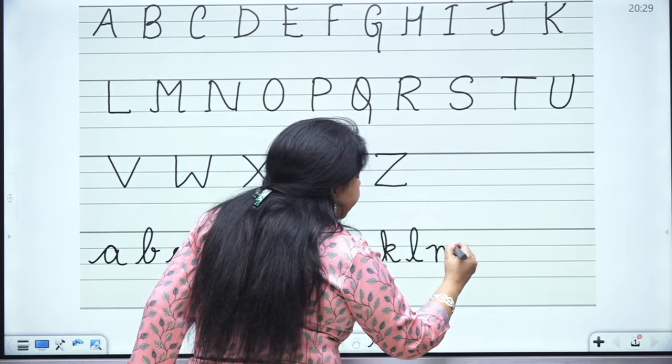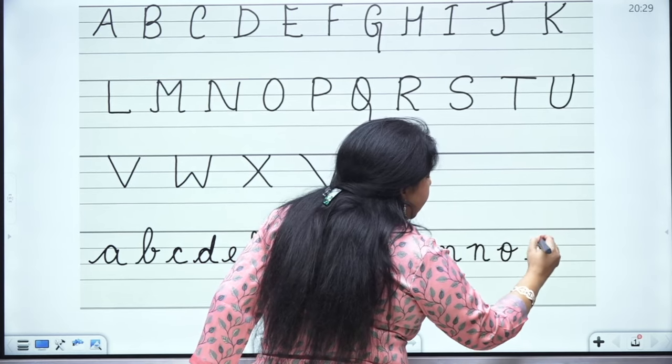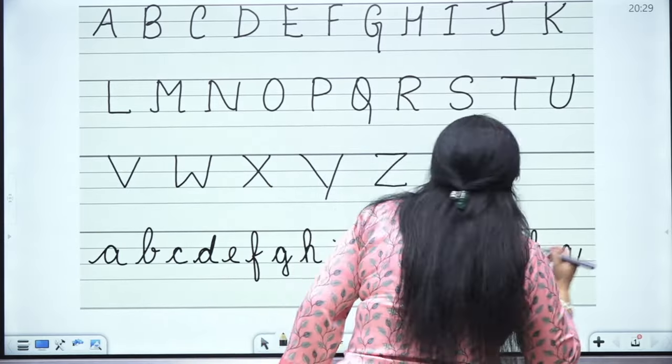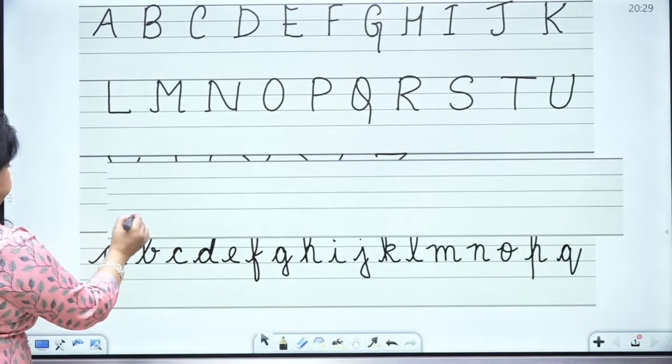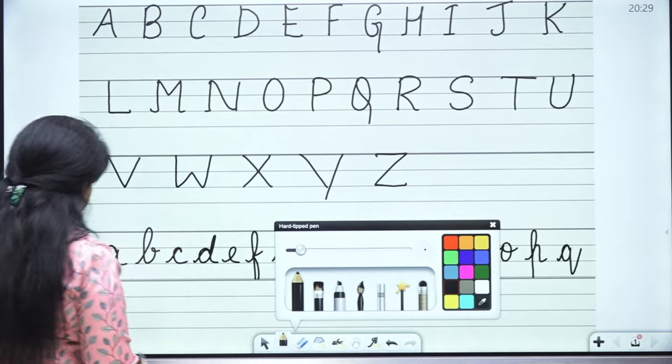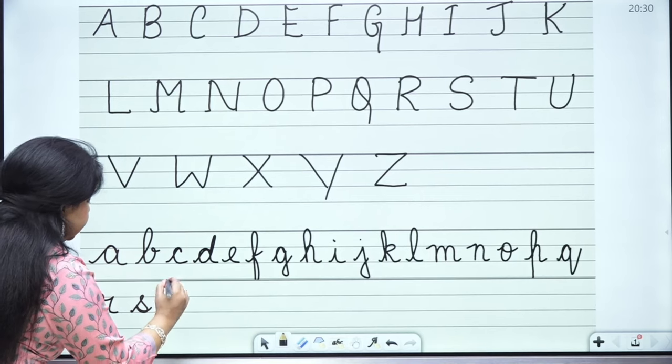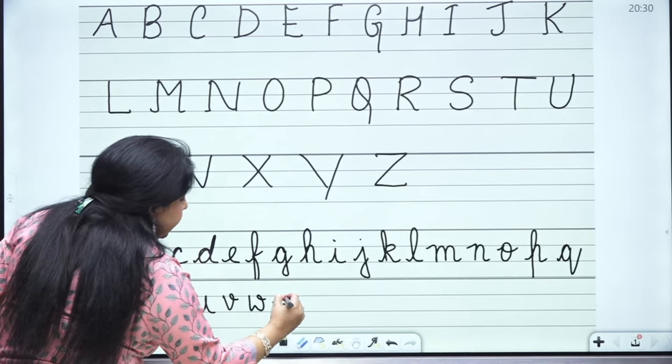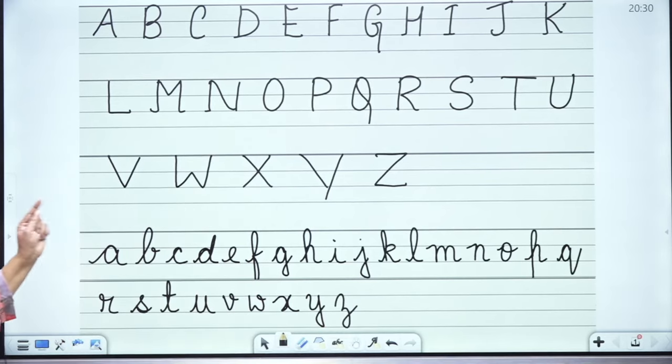M, N, O. When you get the question from this, then we go up and down. P, Q. Look at Q. How do you write Q? I will show you down. Q, R, S, T, U, V, W, X, Y, and Z. This is our small ABCD.